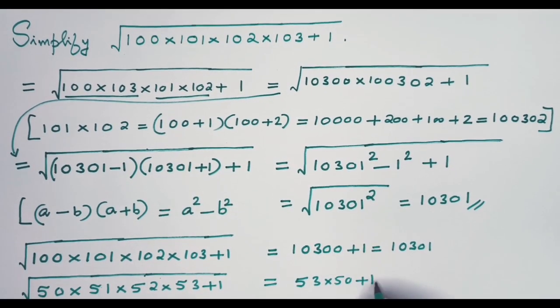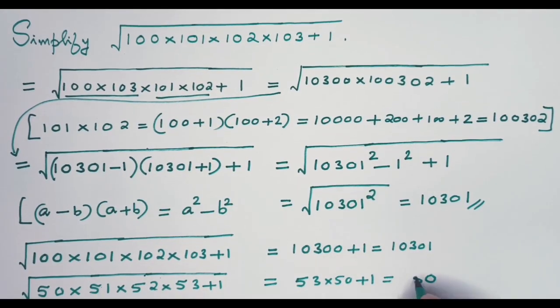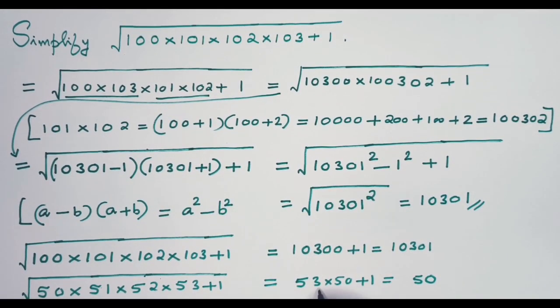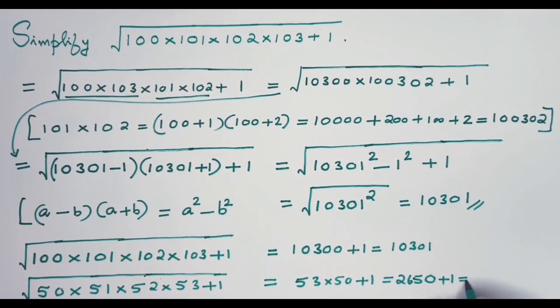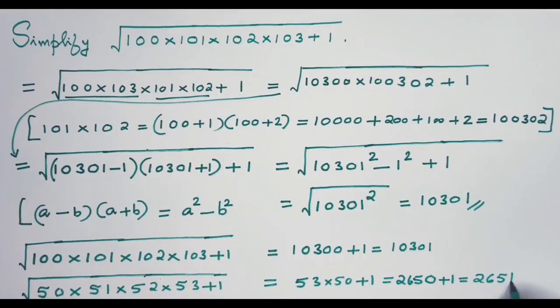When you multiply 53 by 50, this is what you get: 2,650. Then there is 1. This is 2,651.